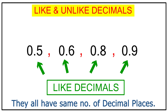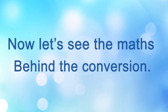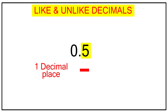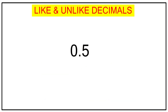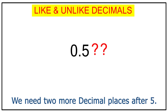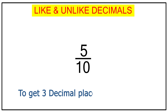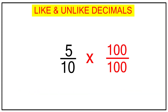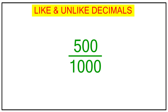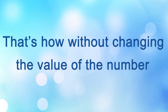Now let's see what math goes behind converting an unlike decimal to a like decimal. Take 0.5 — it has one decimal place and my aim is to reach three decimal places without changing its value. In fraction form, 0.5 is 5 over 10. To get three decimal places I need a denominator of 1000, so I multiply both numerator and denominator by 100, giving 500 over 1000. Converting back to decimal gives 0.500. This shows how you can convert an unlike decimal to a like decimal without changing its value.